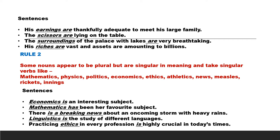Let's see the following sentences. His earnings are thankfully adequate to meet his large family. We use the plural verb 'are' along with the noun word 'earnings'. We say 'his earnings are' and not 'his earnings is'. The scissors are lying on the table. The surroundings of the palace with lakes are very breathtaking. His riches are vast and assets are amounting to billions.